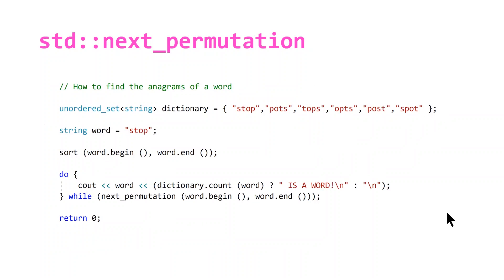Here we have a short piece of code that takes a source word, which in our case is "stop", and it finds all the possible different anagrams of that word. I have a short dictionary here using an unordered set and we're only storing the words that we're actually looking for.